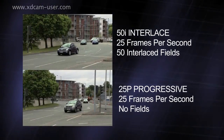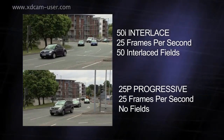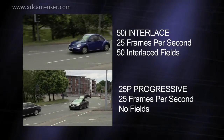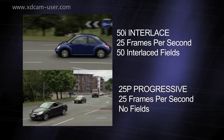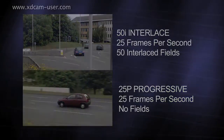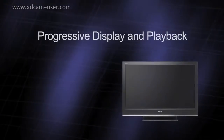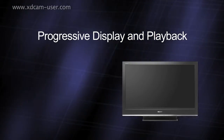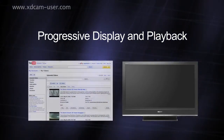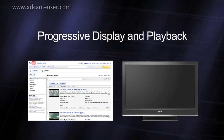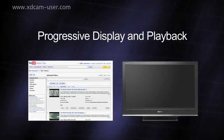Because for any given frame rate, interlaced video is updated twice as often as progressive video, interlaced video can portray motion more smoothly. However, as many modern displays are often progressive devices, such as LCD screens, and more and more content is delivered progressively via the internet, this advantage is often lost.